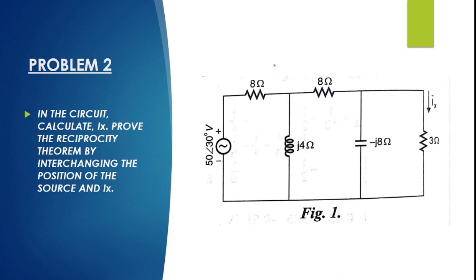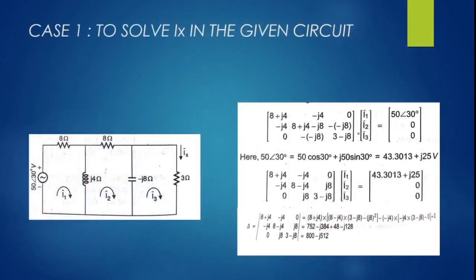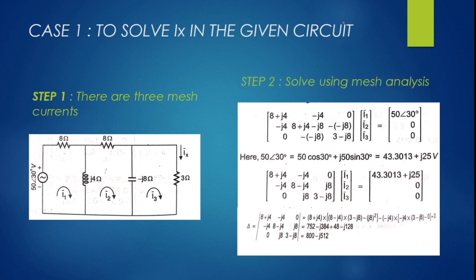Now for the second problem — an AC circuit. At the input we have voltage source E. In Case 1, assign mesh currents I1, I2, I3 and solve using mesh analysis to find the ratio of excitation to output current Ix. In Case 2, move the voltage source to the other port and measure Ix there. If both ratios are equal, reciprocity theorem is verified.